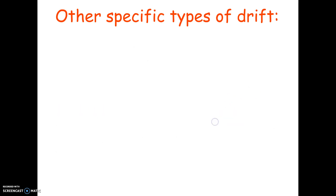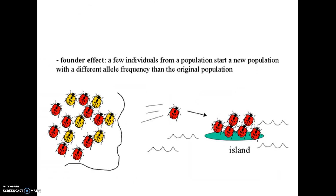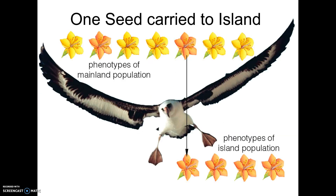Here are diagrams to illustrate these. For bottleneck: you start with all this variation, but only a few survive, and now the green and red varieties are gone — not because they were bad, but because of few survivors. For the founder effect: a beetle gets blown over to an island, and now most or all beetles on the island are red, even though on the mainland they were a mix. Similarly, a bird brings a seed to an island and the island population of flowers is all orange, whereas the mainland had more yellow.